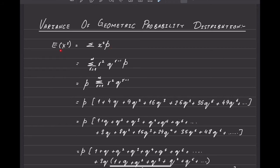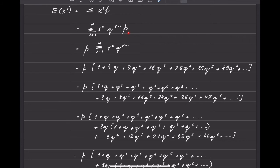Now we're going to look at the derivation of the variance of the geometric probability distribution. To find the variance we need to find E[X²]. We know that E[X²] is the summation of x squared times probability, so for random variable r, that becomes the summation from r equals 1 to infinity of r squared times q to the power r minus 1 times p.